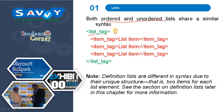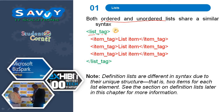The list tag for an ordered list is OL, and for an unordered list it is UL. The item tag is LI for each list item.